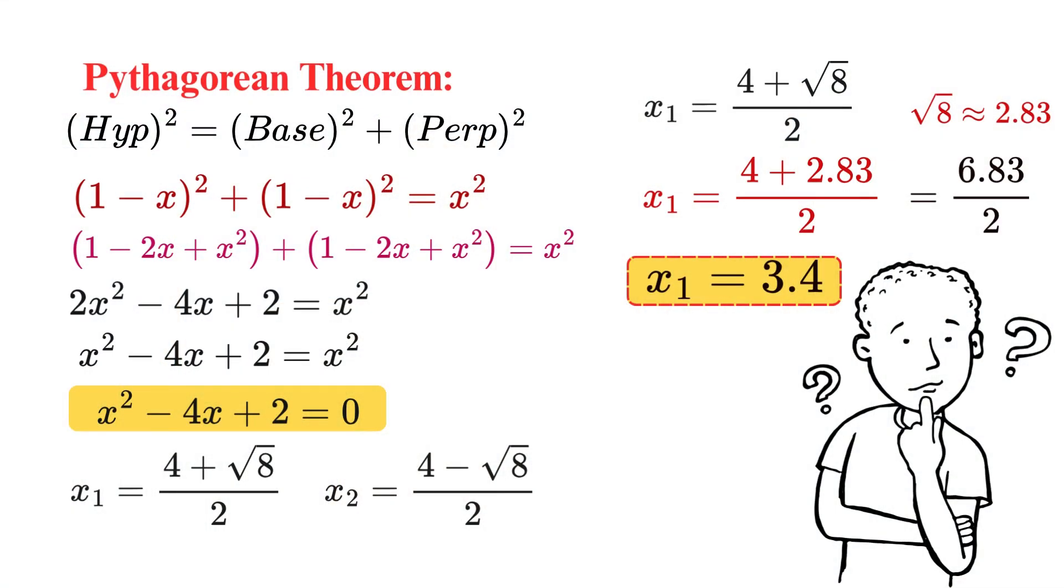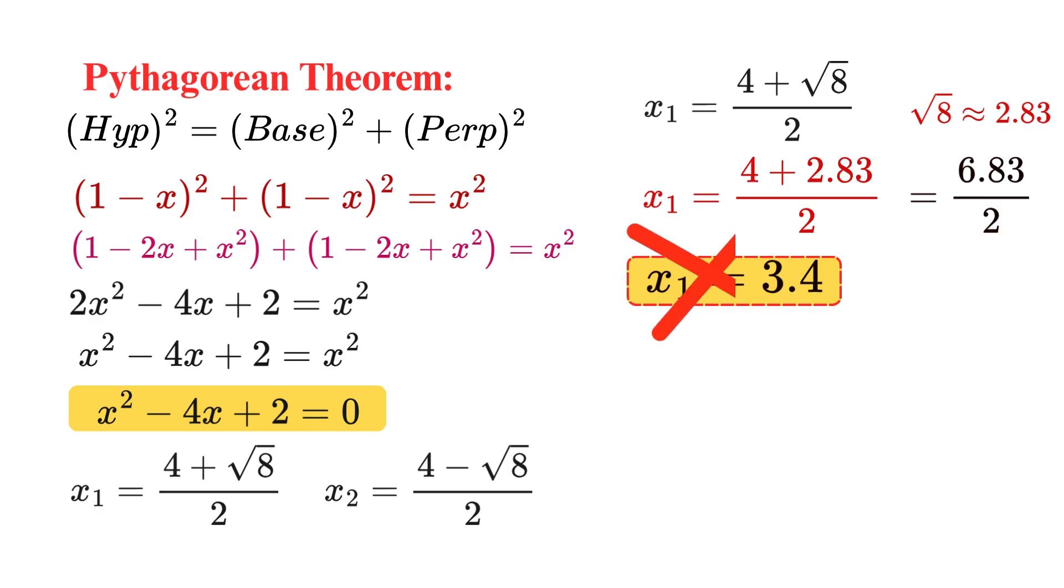Oh, wait a minute. 3.4. Our entire square has sides of length 1. So, how could the hexagon, which fits inside the square, have a side length of 3.4? That is more than 3 times bigger than the square itself. So it doesn't make any sense at all. The hexagon can't be bigger than the square it's sitting inside. Therefore, x₁ is not valid. So we throw this solution out. That means our answer must be x₂.